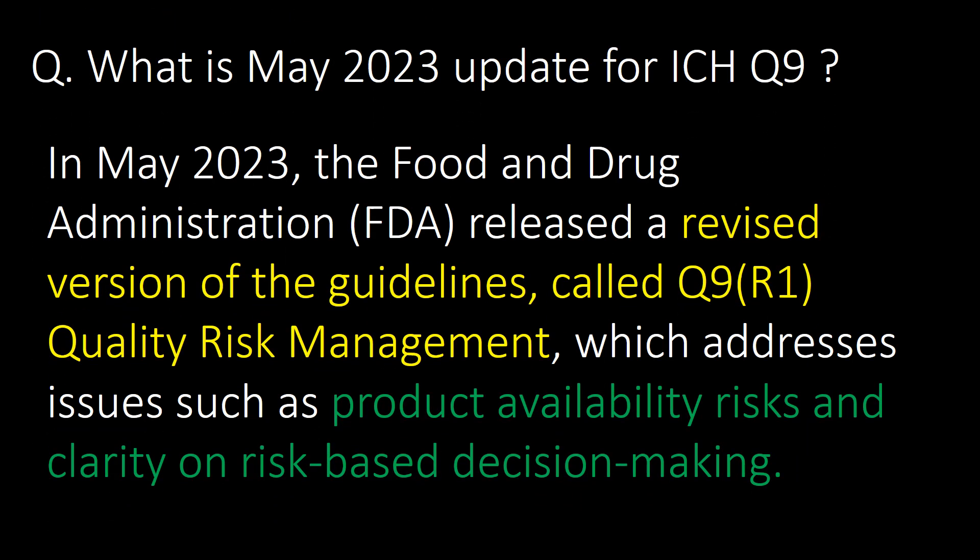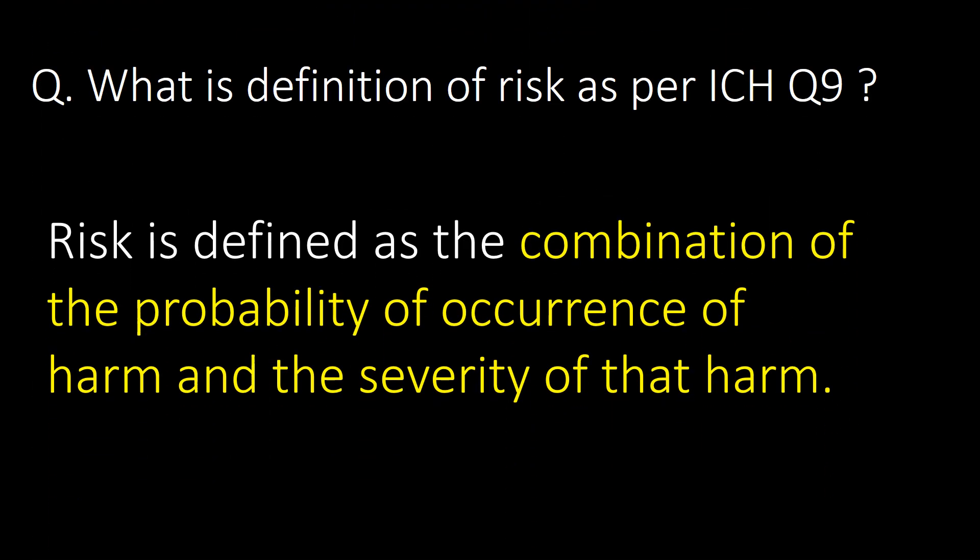Question about recent updates: what was the May 2023 update for ICH Q9? In May 2023, the FDA released a revised version of the guidelines called Q9 R1 for quality risk management, which addresses issues such as product variability risk and clarity on risk-based decision making.